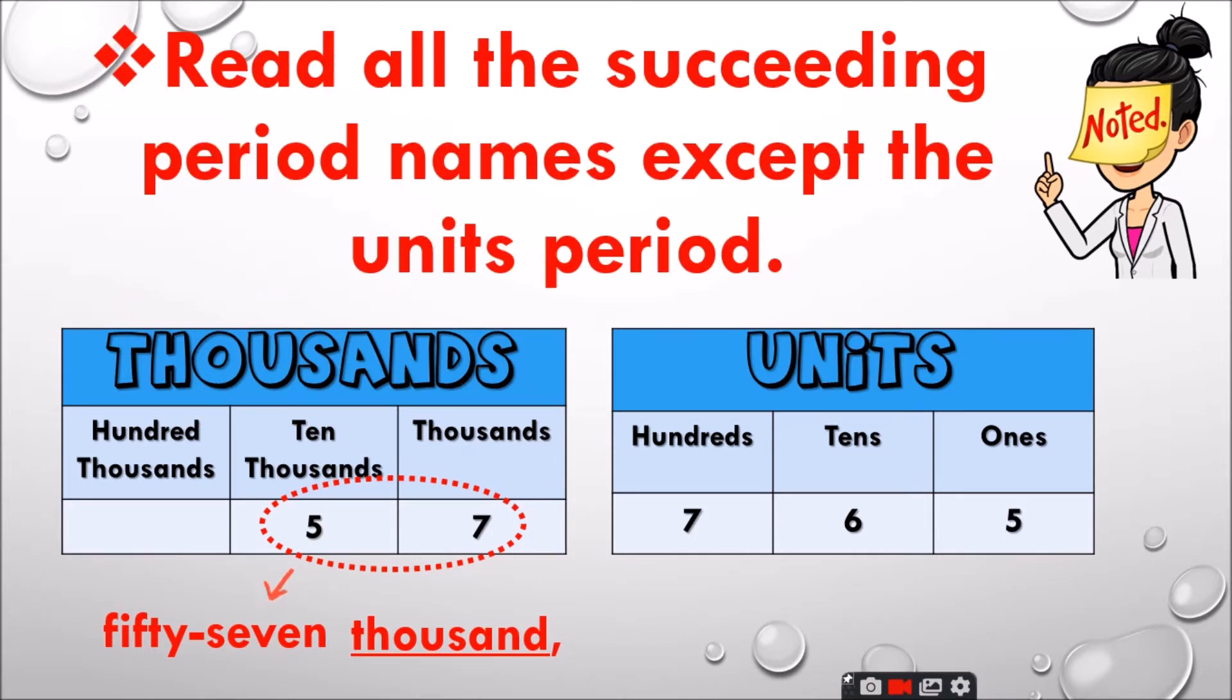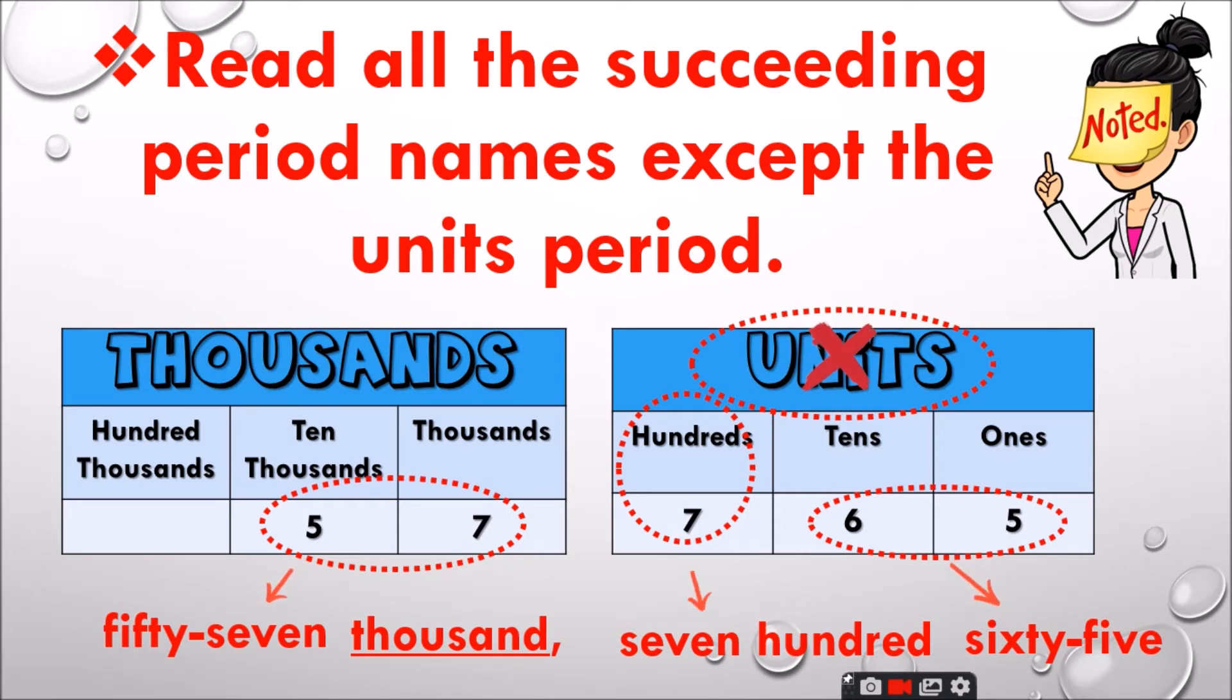Next, read all the succeeding period names except the units period. So, we're not going to tell or say the units. So, we have 765. So, this number is 57,765.